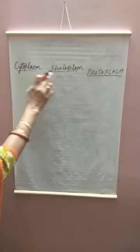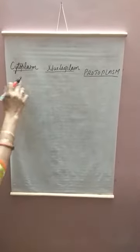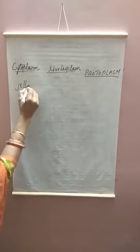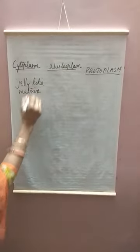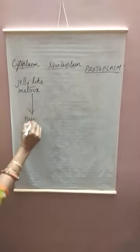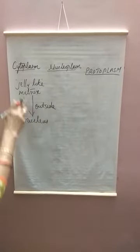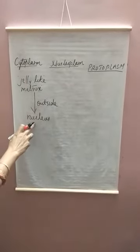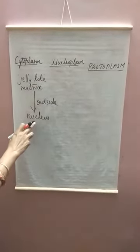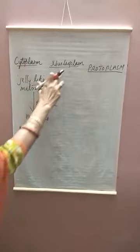Cytoplasm and nucleoplasm are topics you have already studied. Cytoplasm is the jelly-like matrix present outside the nucleus of a cell. The nucleus is the controlling part of the cell, present inside the cell — whether it is a plant cell or an animal cell, the nucleus is present, and outside it is the cytoplasm.